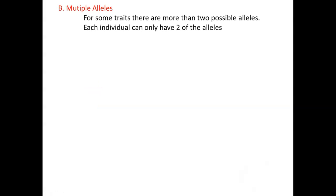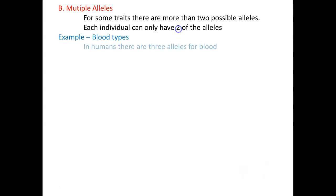Each individual, as you saw from that diagram of the rabbits, can only carry two of the alleles. The bunny fur alleles were chosen from four options, but the individual rabbit only carried two of those alleles. Now, the one example we're going to spend some time talking about is blood typing. In blood typing, we have three alleles for blood type. They're referred to as IA, IB, and I. In the lab, we're probably just going to use the letters A, B, and O instead of IA.